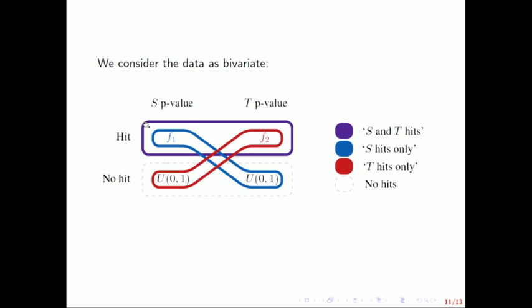So we're going to call that S and T hits, but it's totally possible that you have a low p-value just in one, and vice versa, and then, of course, you can be a non-hit in both dimensions as well. So it means we've got multiple hit labels here.